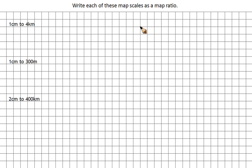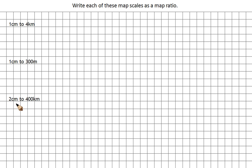We're going to have a look at how you change map scales into map ratios. At the moment these are all map scales. This tells me that 1 cm on my map relates to 4 km in real life. This tells us that 1 cm on my map is 300 m in real life. And this tells me that 2 cm on the map is 400 km in real life.